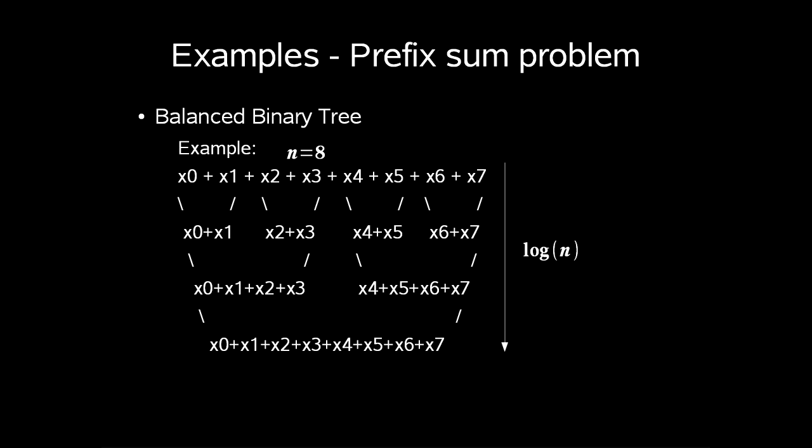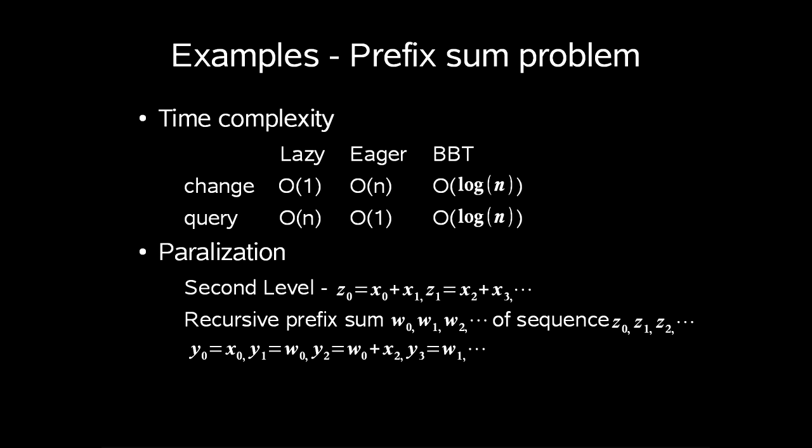Now how do we answer a query using this tree, you might wonder? The idea is to compute everything on the left of our index we want. So in example y4 is the value of x0 up to x4 added together. So we only have to look up the x0 plus x1 plus x2 plus x3 node and add x4. So we would have to go log n up into the tree. This can be generalized and applied to parallelization, as the second level of our tree would be called z.